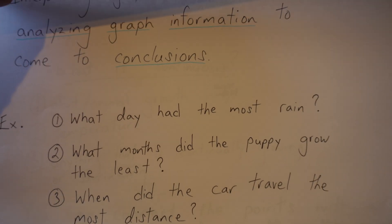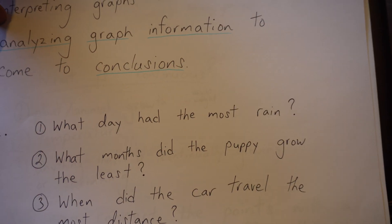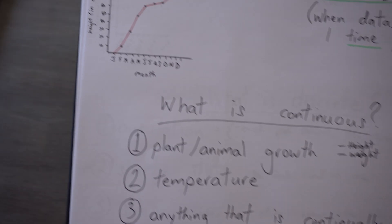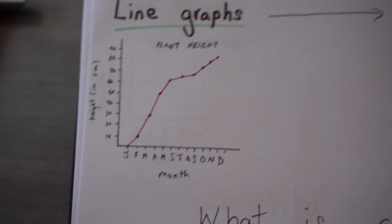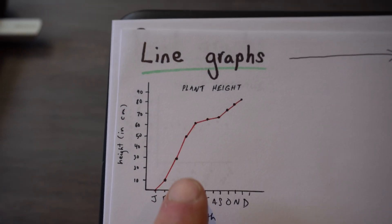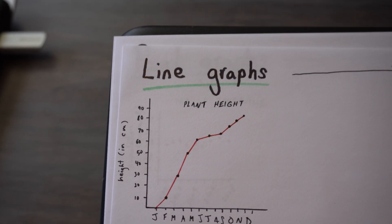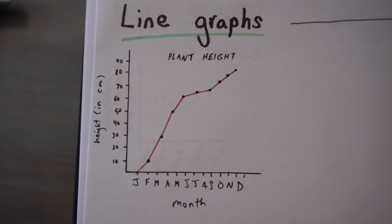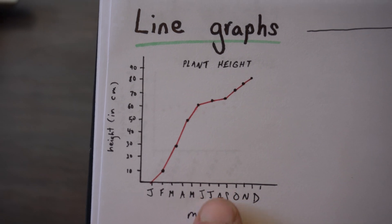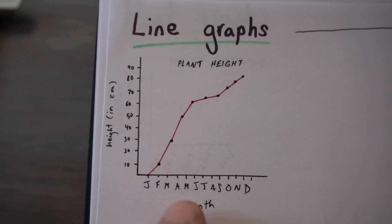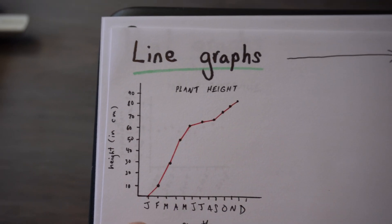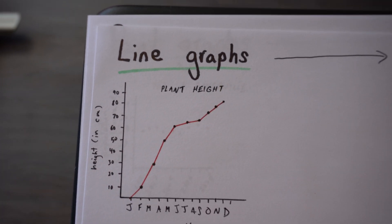There's two main types of graphs we'll talk about today. The first is line graphs. And a line graph is when you can join all the points to form a line. So you see my plant heights, I've got the month, and I've got the height in centimeters, and we can join those points with a line.